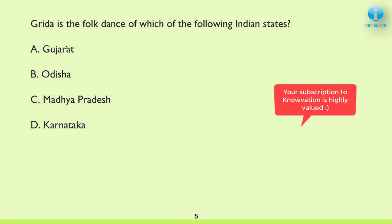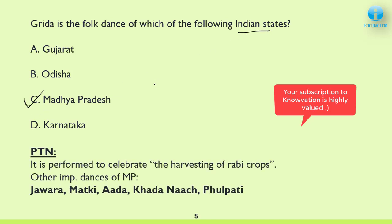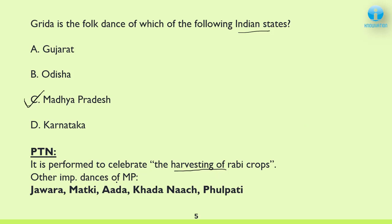Next: Grida is the dance form of which of the following Indian states? The correct answer is C — Madhya Pradesh. This dance form is originally from MP and it is performed to celebrate the harvesting of Rabi crops. Some more important MP dance forms are Jawara, Matki, Ada, Khada Nach, and Phool Paati.